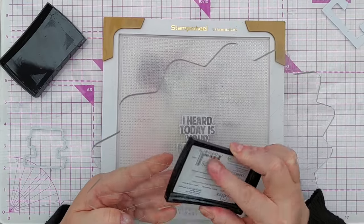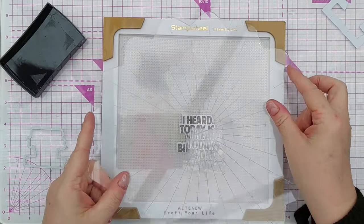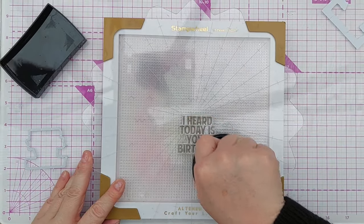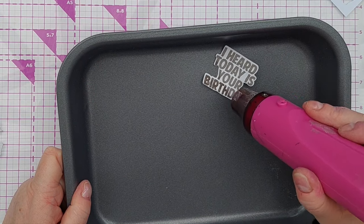And then I stamped it with embossing ink and heat embossed it with clear embossing powder to make it nice and shiny. This also has the effect of deepening the color a bit as well.